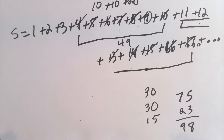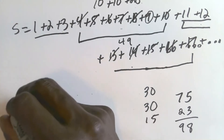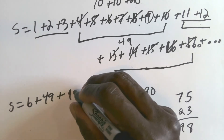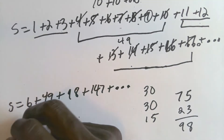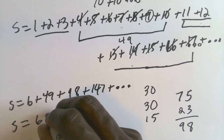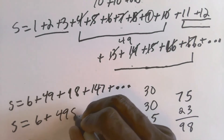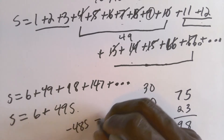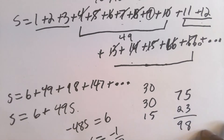The sum of the numbers I didn't use is 6. So S equals 6 plus 49 plus 98 plus 147, et cetera. Factoring out 49: S equals 6 plus 49 times (1 plus 2 plus 3...) which is 49S. Subtracting 49S from both sides: negative 48S equals 6. Dividing both sides by negative 48: S equals negative 6 over 48, or negative one over eight.